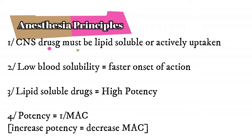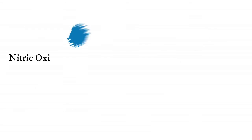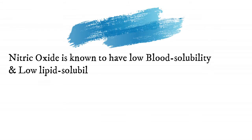Basically, if you increase potency, you decrease MAC. MAC is the minimum alveolar concentration of a drug — basically the amount of drug required to put 50% of patients to sleep and make them unresponsive to pain. We will look into examples right now to make things easier and simpler, but I suggest you pause the video and look at these four principles one more time and try to memorize them.